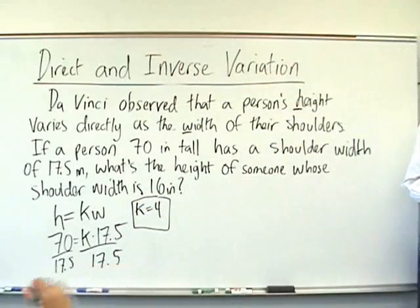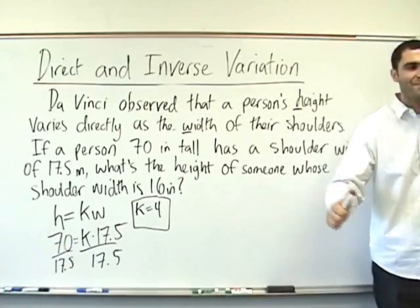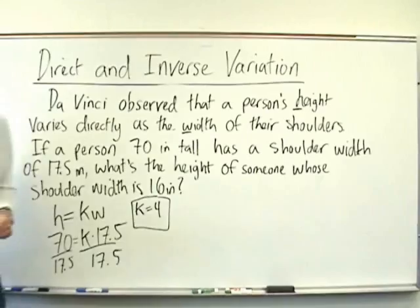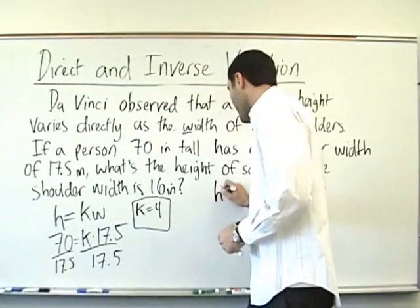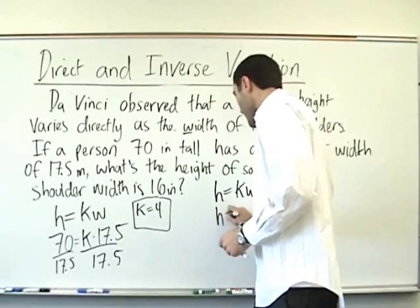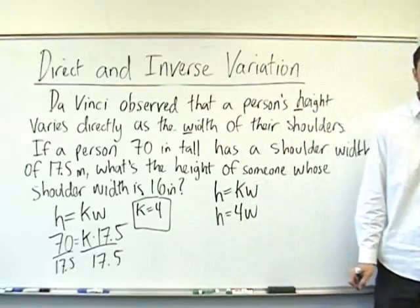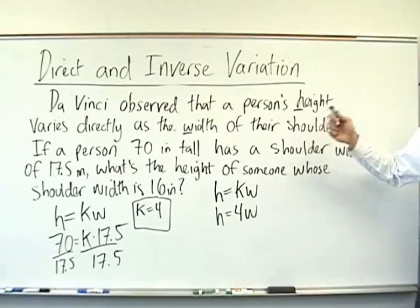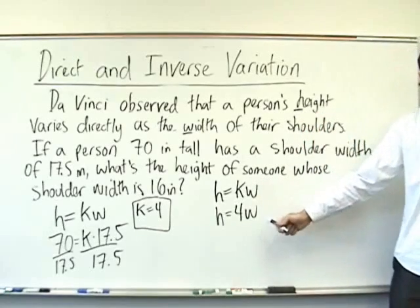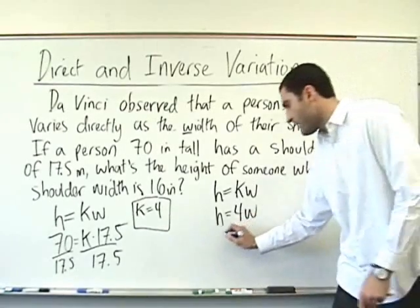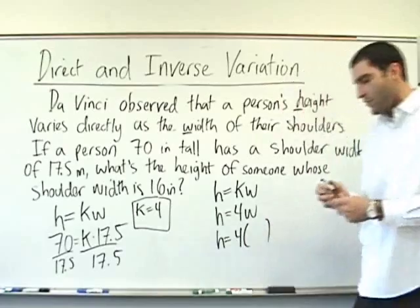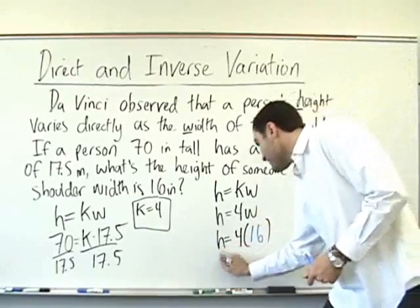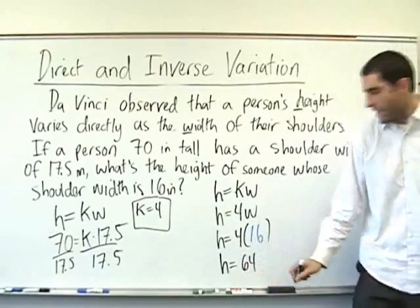Who remembers the next step? Once we got our K? Plug it in. Plug it in to the original equation. Right? No, don't say duh. You're learning. It's cool. H equals KW. H equals four W. So, what's the height of someone whose shoulder width is 16? Four times 16. So, let's plug it in. H equals four times our new width of the shoulders is 16 inches across. Four times 16 equals 64. H equals 64. 64 what? Inches. Any questions on direct variation? No. That's the idea.